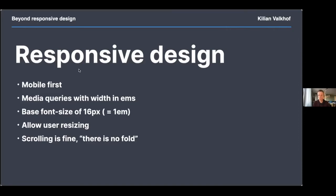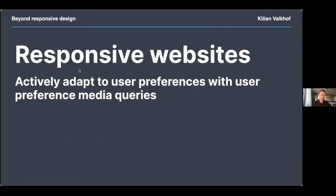From responsive design we're moving to responsive websites. Responsive websites are still responsively designed but they go one step further — they actively adapt to user preferences with user preference media queries. They don't just reason about what a device can do, which is what traditional media queries were about. We used to have device width, device height, the number of colors a device could show — but now we're moving on to being responsive to the user, their needs, their environment, and their preferences.